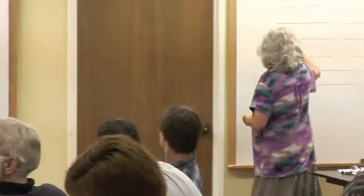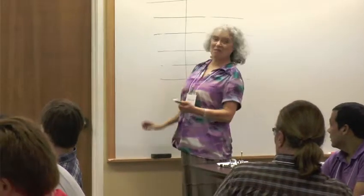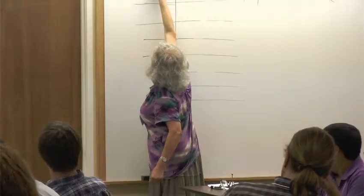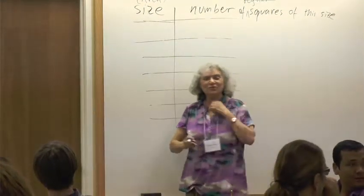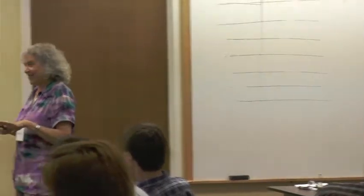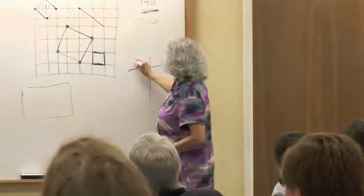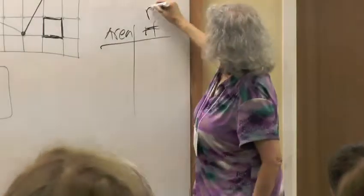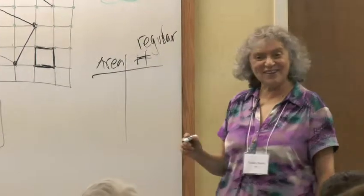I'd really like to have your agreement. I want you to agree that by size we mean area. In fact, if we said area to begin with, one by one is area one. So if we have area and then number of regular squares, our table would look very, very neat too.